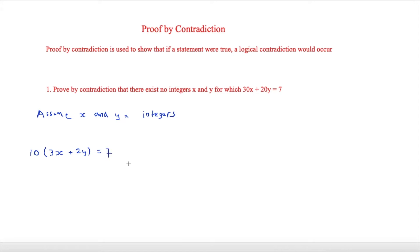Now this is the part where we can show that they cannot be integers, because 3x + 2y is therefore going to be equal to 7/10. As an integer plus an integer cannot equal 7/10, then this assumption must be incorrect.